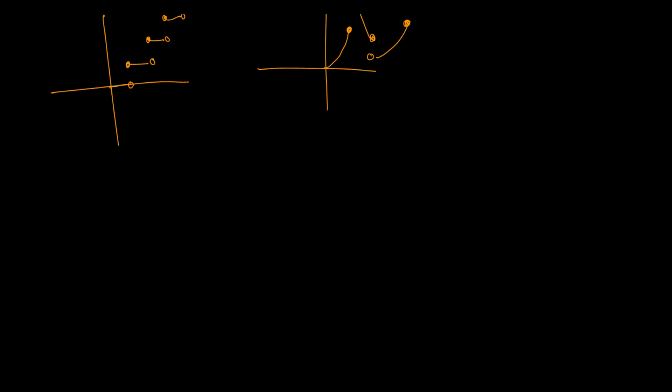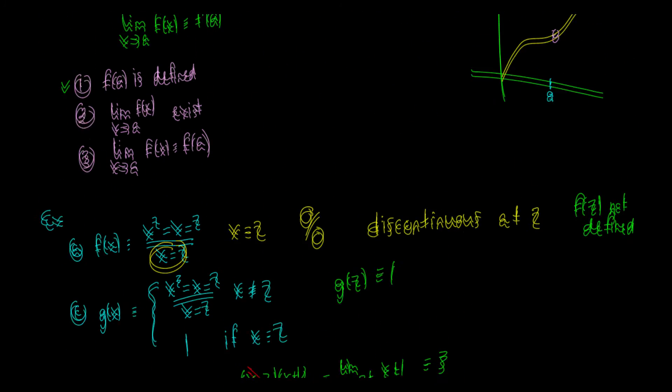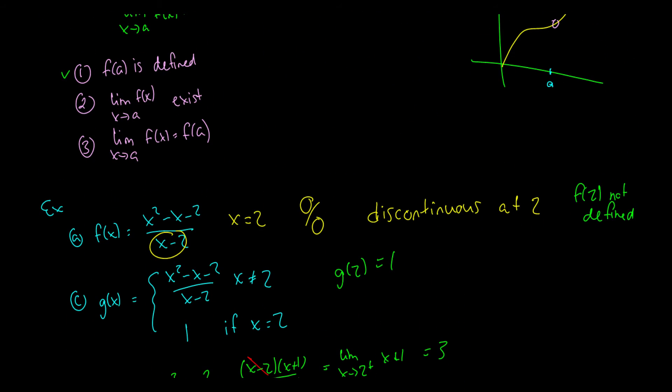But if you want to determine formally whether a graph is continuous, you should look over these three criteria, because this is the formal definition of continuity.